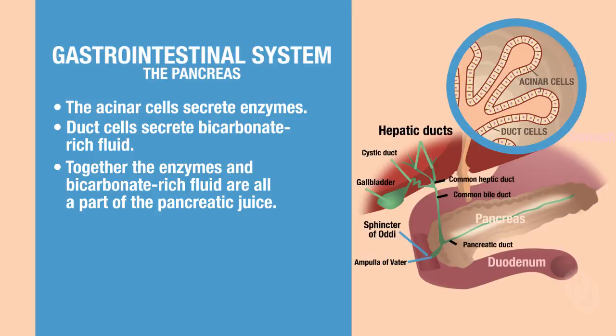The pancreatic juice, once produced, passes through the pancreatic duct, through the ampulla of Vater, through the sphincter of Oddi, and into the duodenum.